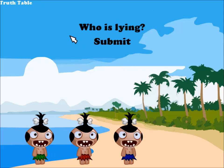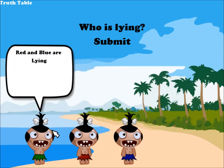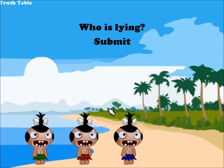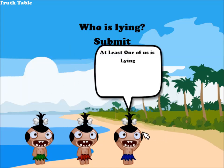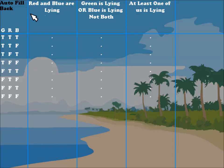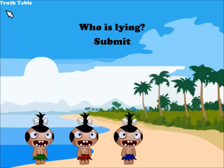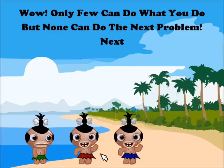Next problem — also straight out of the book. Green says red and blue are lying. Red says green is lying or blue is lying, but not both. Blue says at least one of us is lying. We use the truth table and hit autofill. Looking for a consistent row — false-true-true lines up: false, true, true. So the liar is Green. We go back, accuse Green, hit Submit, and that's correct. The truth tellers dance, and the program says, only few can do what you do, but none can do the next problem.